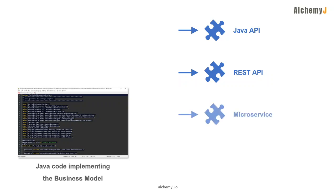Microservice, which could be a variant of REST API, is a technology for API running in a distributed environment. We shall talk about this in detail in the coming video. Finally, AlchemyJ can generate JavaScript API, which is mainly used for UI operations.